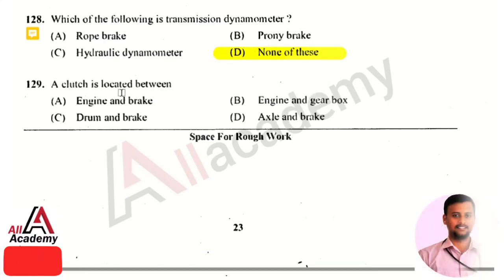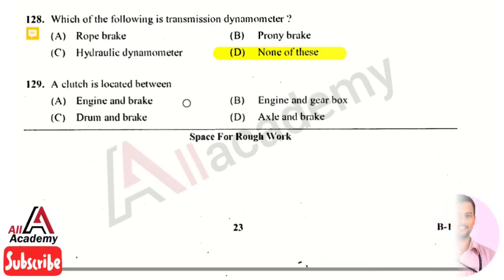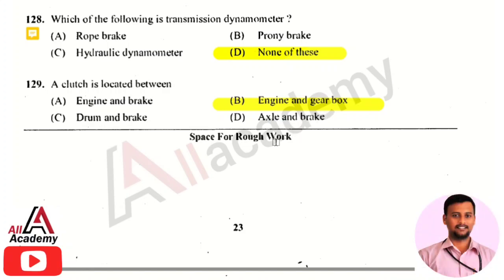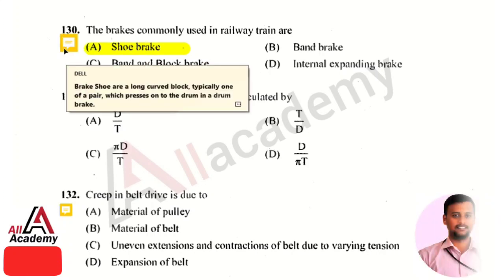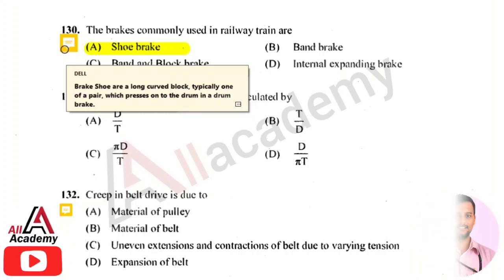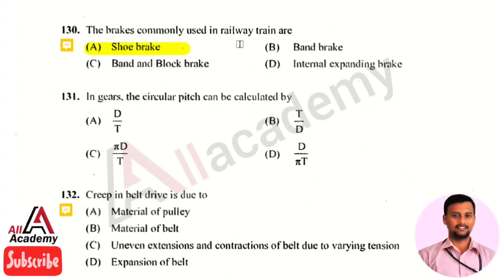A clutch is located between the engine and the gearbox. The brakes commonly used in railway trains are shoe brakes. A brake shoe is a long curved block, typically one of a pair, which presses on the drum in drum brakes. In railway trains, shoe brakes are more commonly used.